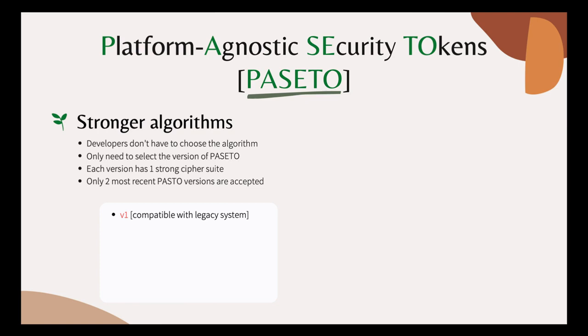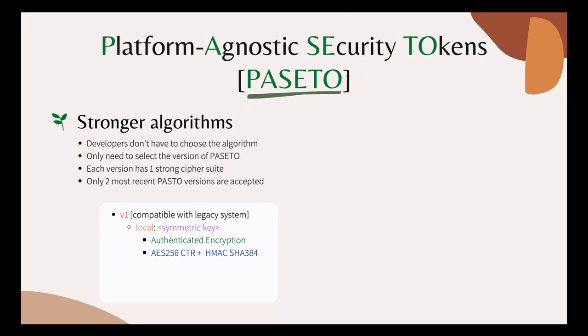Version 1 is older and should only be used for legacy systems that cannot use modern cryptography. Similar to JWT, PASETO also has 2 algorithm categories for 2 main use cases. For local or internal services, we use a symmetric key algorithm. But unlike JWT, which only base64 encodes the payload and signs the token, PASETO actually encrypts and authenticates all data in the token with a secret key, using a strong authenticated encryption with associated data algorithm, or AEAD. The AEAD algorithm used in PASETO version 1 is AES-256-CTR with HMAC-SHA384.